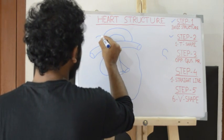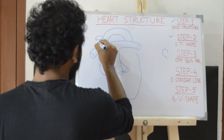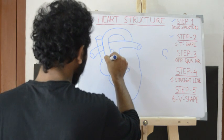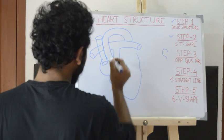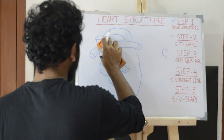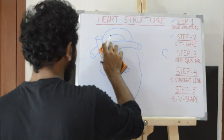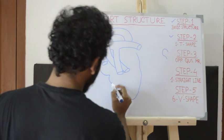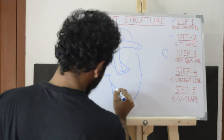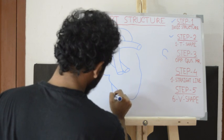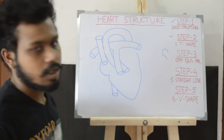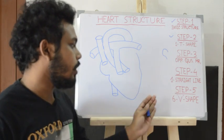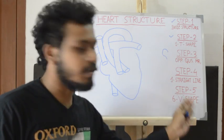Let's draw it. This is the straight line structure completed. The fifth and last step is the sheet of six V-shaped structures.